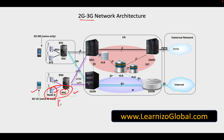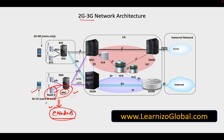In 4G we want to reduce that latency further. To minimize that, we have combined the functionality of Node B and RNC, and this combined functionality is referred to as eNodeB (evolved Node B). So instead of having two components like Node B and RNC, we have only one component called eNodeB, and we don't have a separated network function in the radio access network.